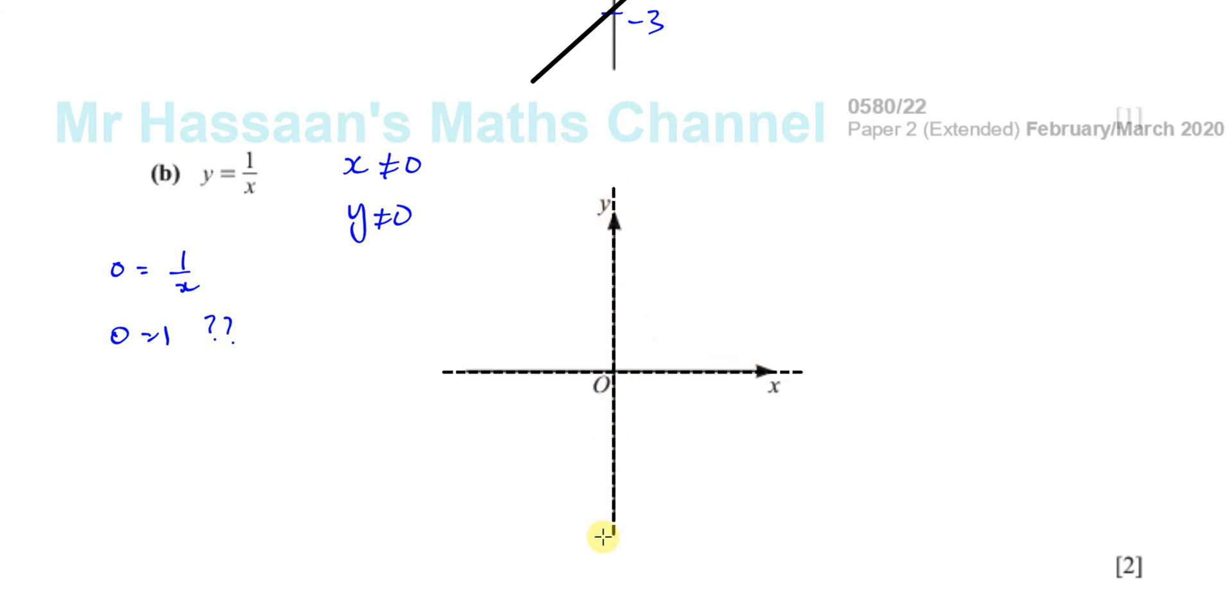And this is called an asymptote. I've drawn it slightly further along so you can see. So x equals 0 is this line here, which is an asymptote, and y equals 0 is this line here, which is also an asymptote. So this curve can never touch these two lines.